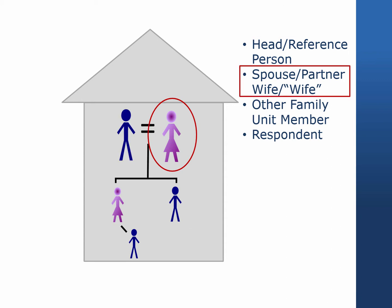Before 2015, a spouse of a household head was referred to in the documentation as a wife, while a cohabiting partner that lived with the household head for at least one year before the interview was designated as a wife in quotations, indicating that the partners were not legally married. Since the late 1970s, information typically gathered for spouses has been collected for partners as well. In 2015 and beyond, the spouse of a head or reference person is coded as spouse, while long-term cohabiting partners are coded as partner.